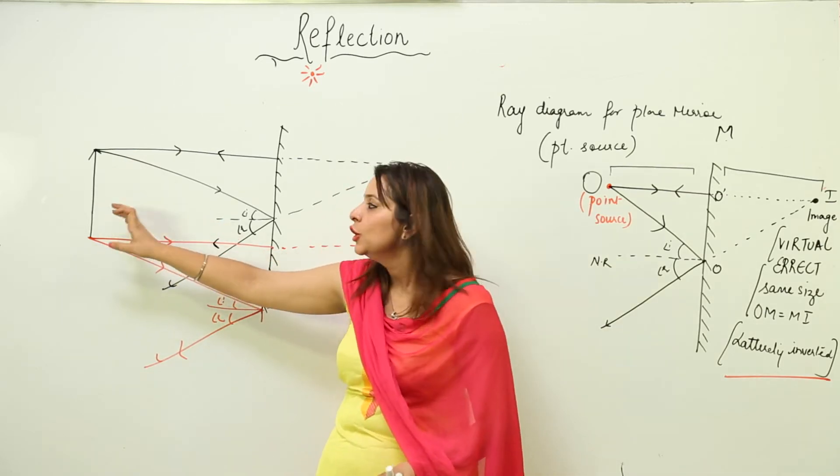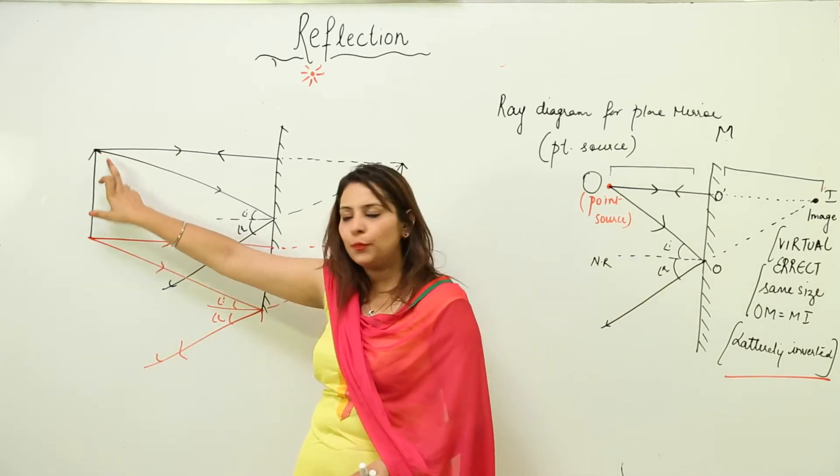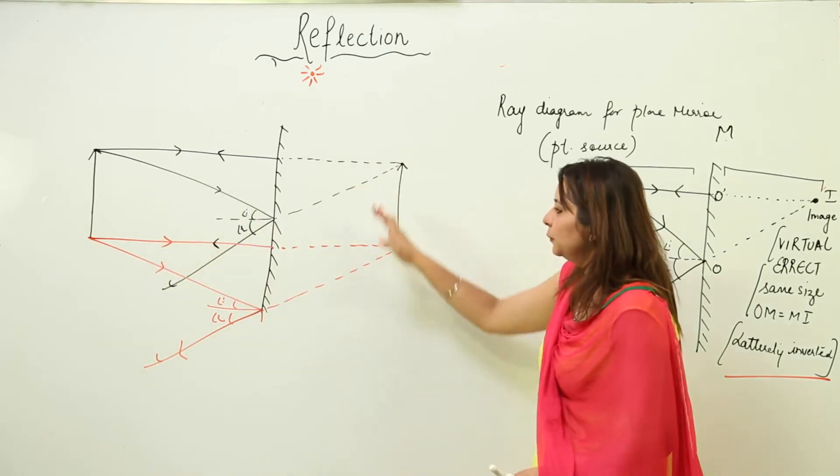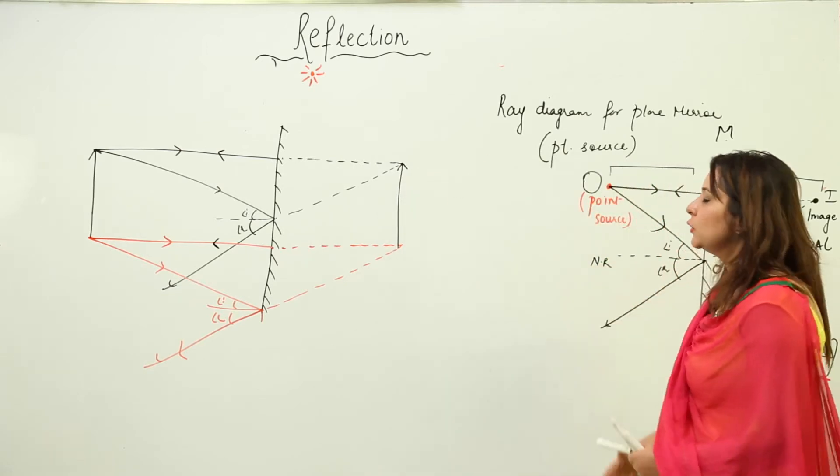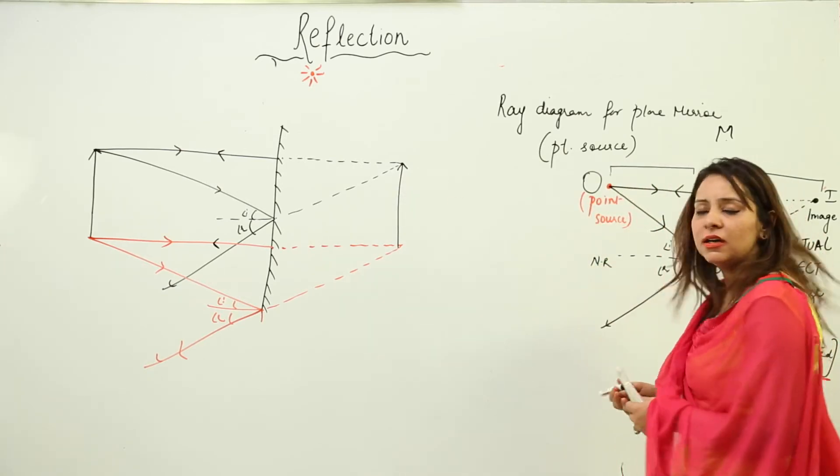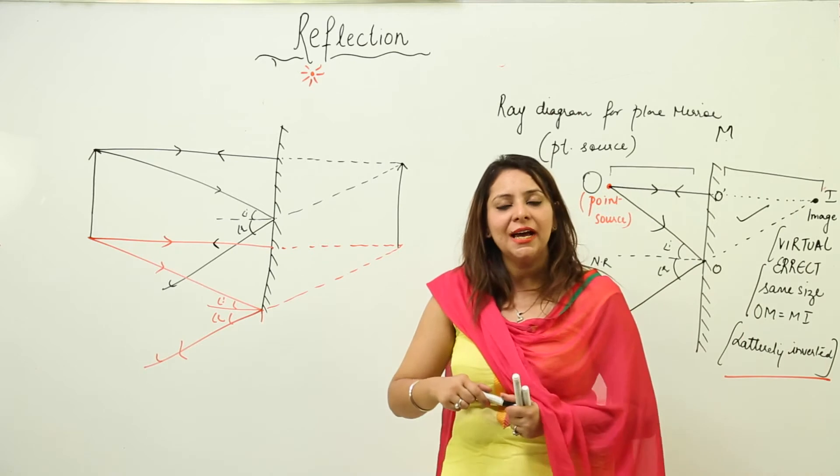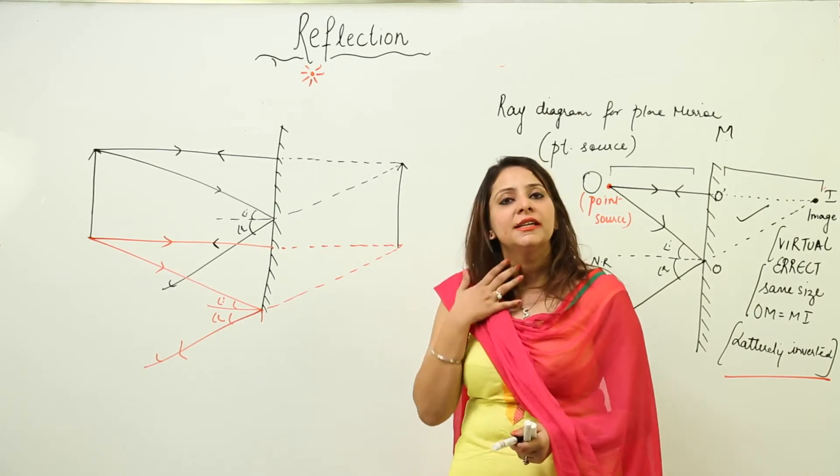I think you got it, because it's not easy to draw the light rays coming from all these points. So what we did, we drew from the upper point and from the lower point, so we got a complete object or finite object. And the characteristics for this one is the same: that is virtual, erect, same size, distance of object from mirror is same as mirror from image, and it is laterally inverted.